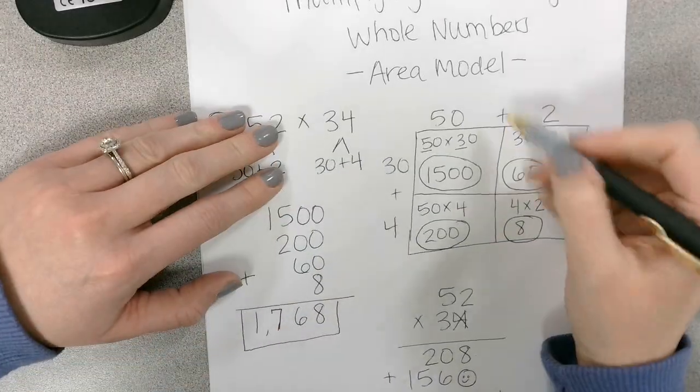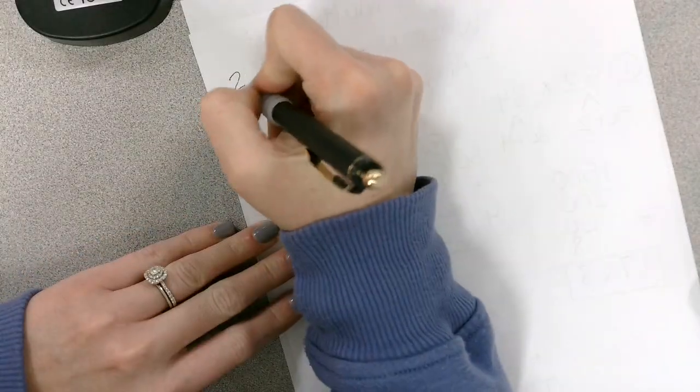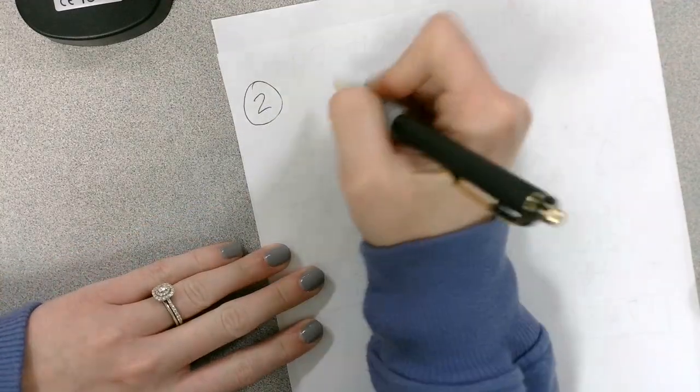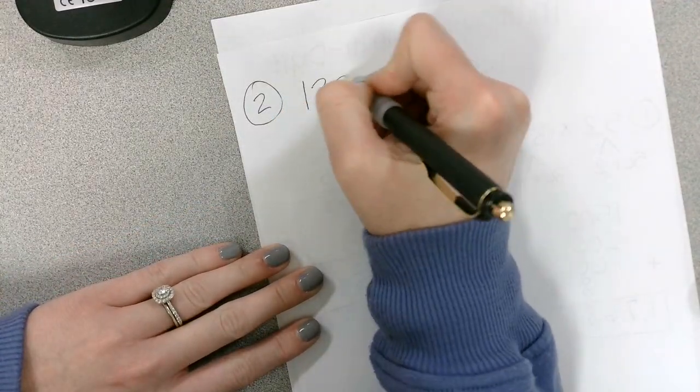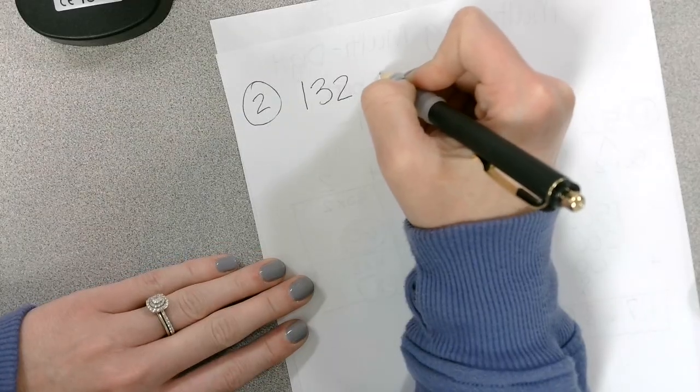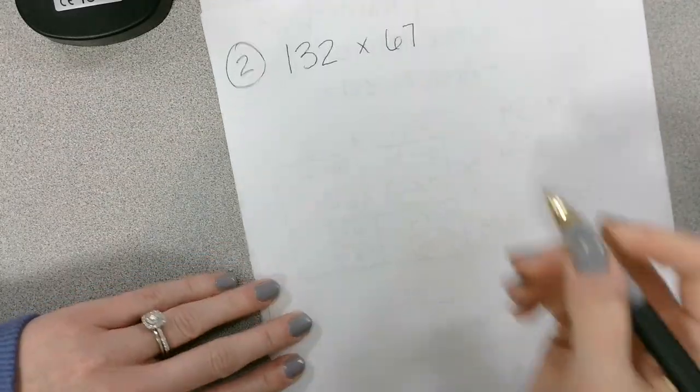So this is using the area model and connecting that to the standard algorithm. We're going to do one more on the back. We can even do a bigger number like 132 times 67.